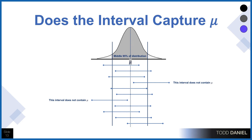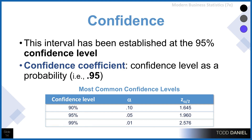Here's what this looks like visually: we have a distribution for the population with a mean in the middle of the normal curve. Each line represents a confidence interval computed by a student. Out of 100 confidence intervals, 95 contain the mean, and 5 — through random chance — do not. We say the interval has been established at the 95% confidence level. The confidence coefficient is .95. The most common confidence levels are 90%, 95%, and 99%, corresponding to alpha levels of .10, .05, and .01, and Z values of 1.645, 1.96, and 2.576.